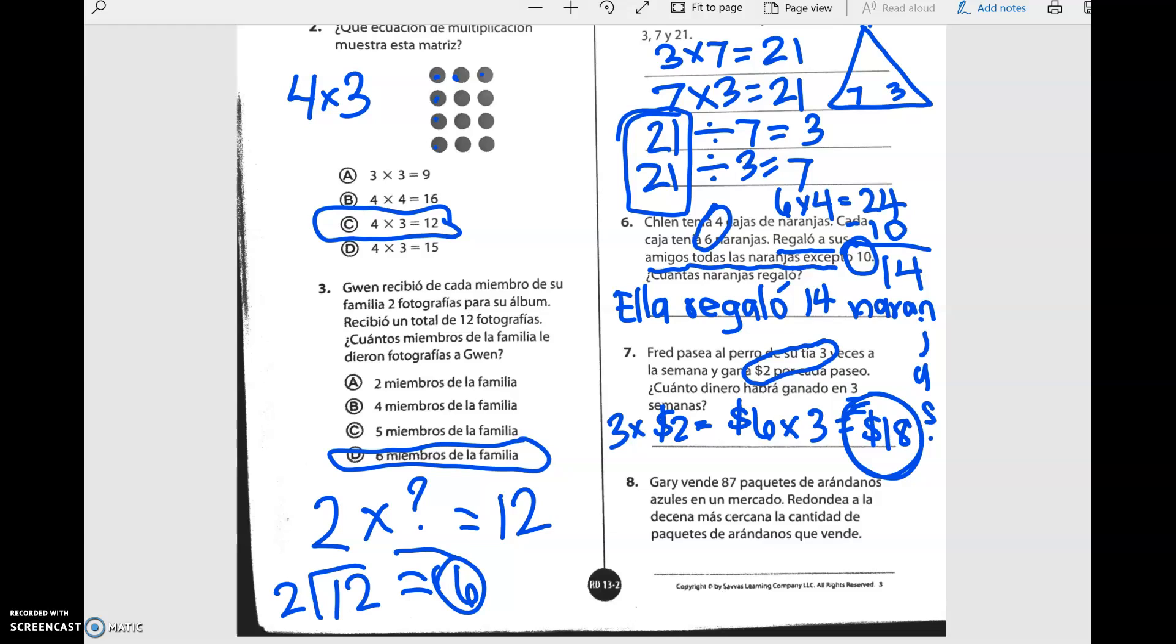He earns two dollars for every time he walks them and he walks them three times a week. So he gets six dollars a week times three weeks, eighteen dollars. And if you're being a really smart third grader, él habrá ganado dieciocho dólares.